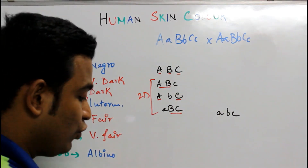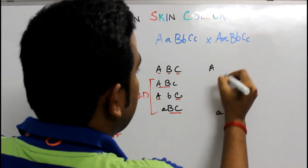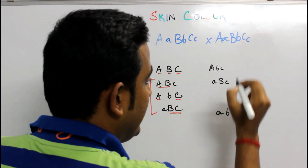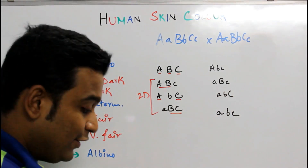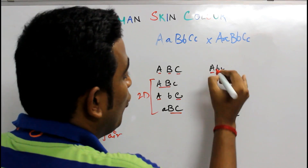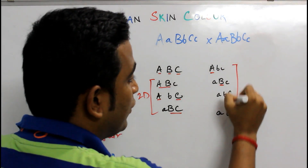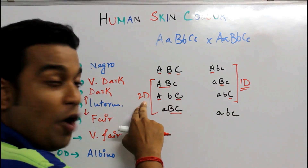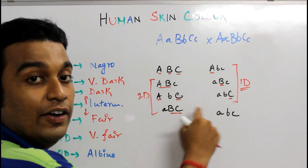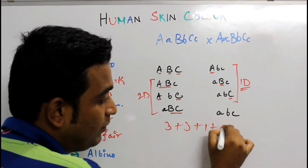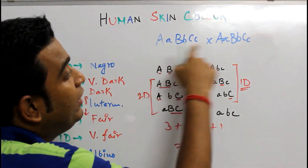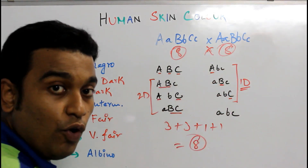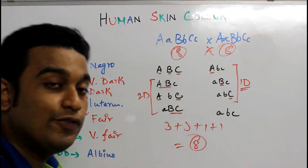Now going to single dominant: for gene A only dominant, gene B only dominant, and gene C only dominant — three gametes of one-dominant type. So counting all gametes: one gamete of three-dominant, three gametes of two-dominant, three gametes of one-dominant, and one gamete of zero-dominant. That's one plus three plus three plus one — eight gametes total from each individual. Eight multiplied by eight gives 64 results, so you will be getting 64 offspring combinations. I'm not going to make all 64 here — that will be your assignment to do at home.